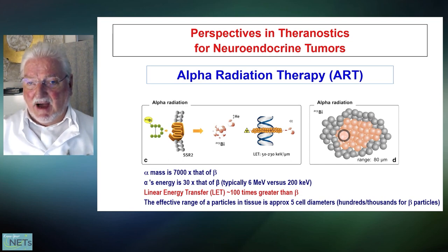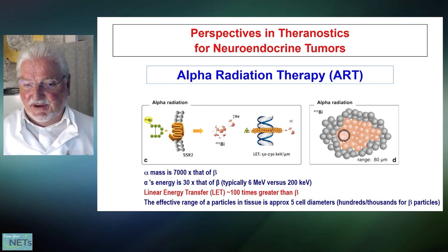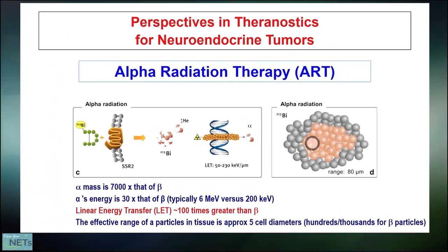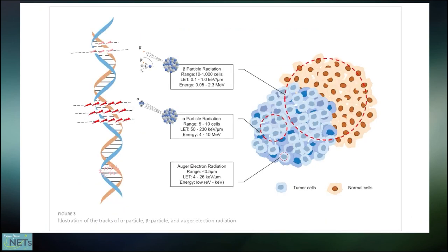What about alpha? Alpha radiation therapy is much, much more powerful than beta energy. We call it linear energy transfer — it's about 100 times greater than beta. It means that you can destroy the DNA much more effectively than using beta emission. The range of cells hit by beta is about 10 to 1000 cells, whereas alpha particles have a very short range but completely destroy the DNA because the LET is much higher than for beta particles. All alpha emitters have a very small range, so they hit only single cells — very low range — but they kill the cells very effectively.